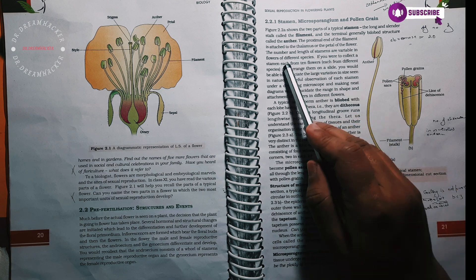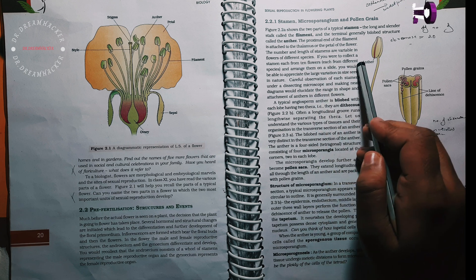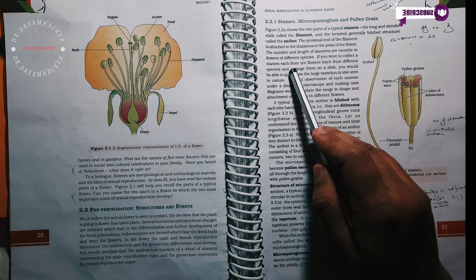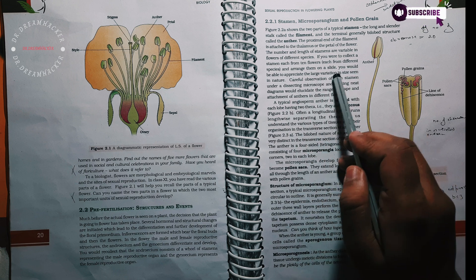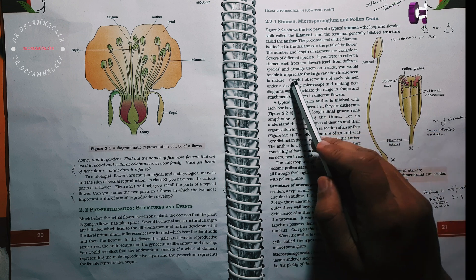If you were to collect a stamen, each from 10 flowers, each from different species and arrange them on a slide, you would be able to appreciate the large variation in size seen in nature.